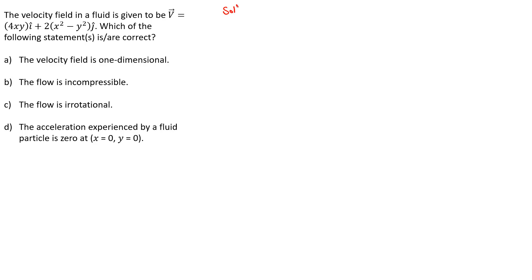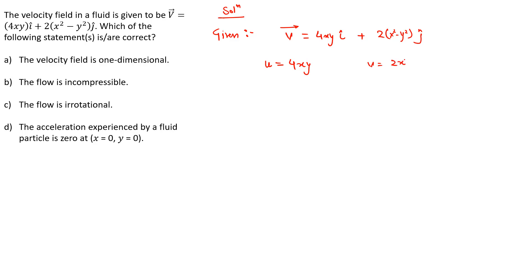Now let's solve this question. We are given the velocity field V = 4xy î + (2x² - y²) ĵ. From this, the u-component is 4xy and the v-component is 2x² - y². Since there are two components to the velocity field, the flow is surely not one-dimensional — it is two-dimensional. So Option A is incorrect.